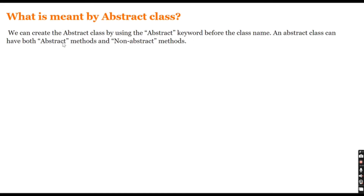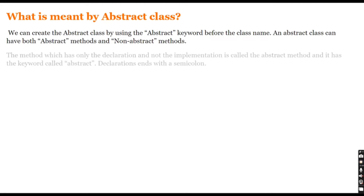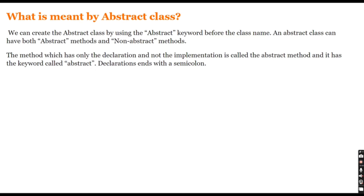An abstract class can have both abstract methods and non-abstract methods. Non-abstract methods are our regular methods, but the abstract class can also contain abstract methods. A method which has only the declaration and no implementation is called an abstract method. Abstract methods only have the declaration, no body, and require the abstract keyword; the declaration ends with a semicolon.